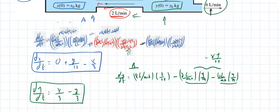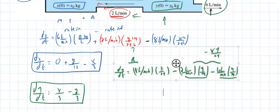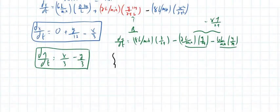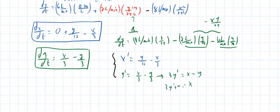I'm going to use substitution with a 2 by 2 matrix. x prime is y divided by 12 minus x over 3, and y prime is x over 3 minus y over 3. From the second equation, 3y prime equals x minus y, or simply x equals 3y prime plus y.